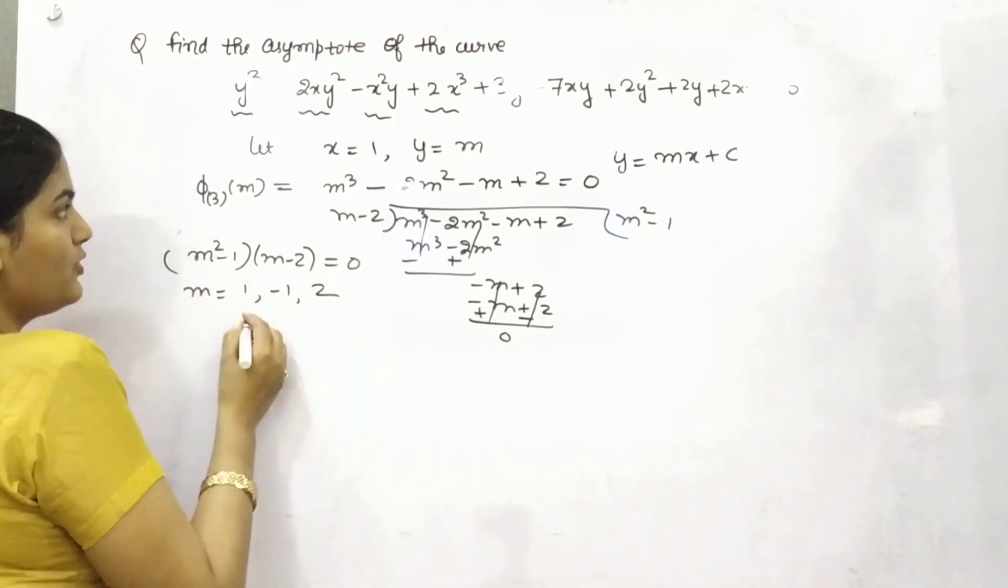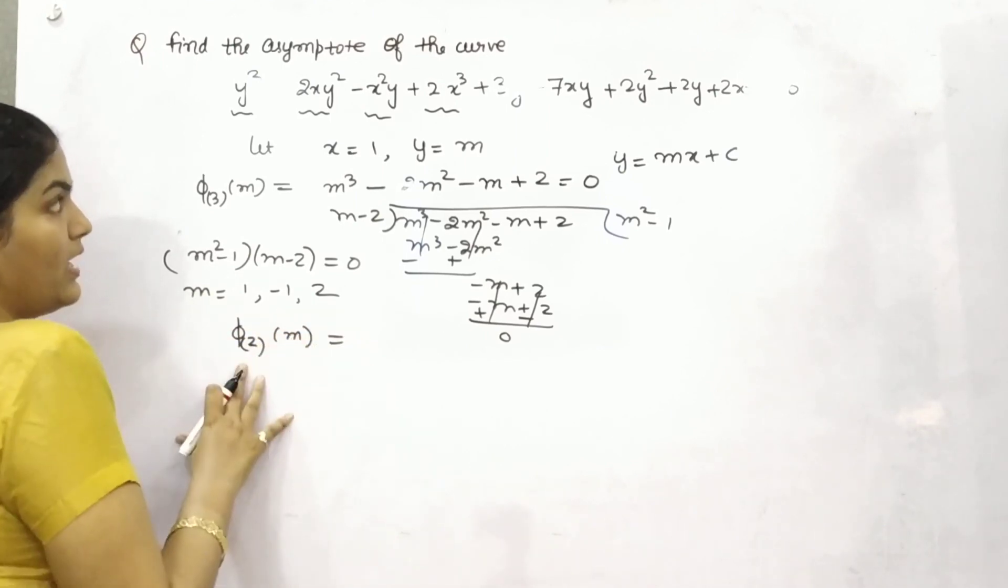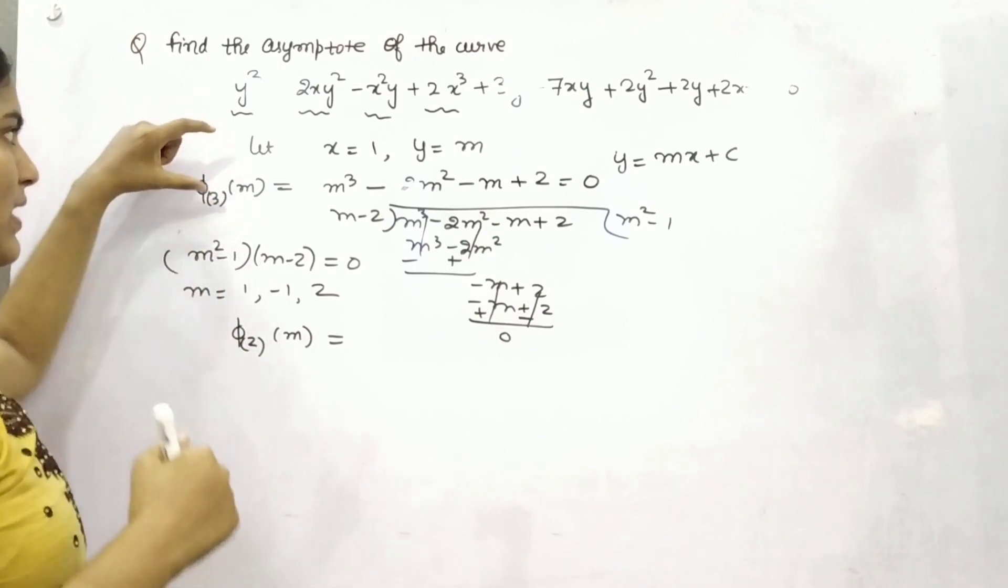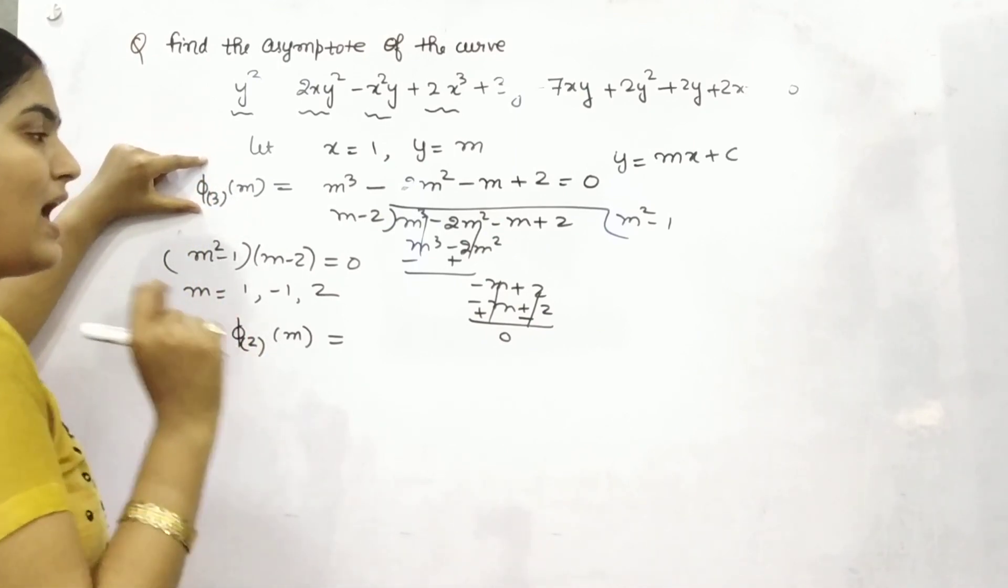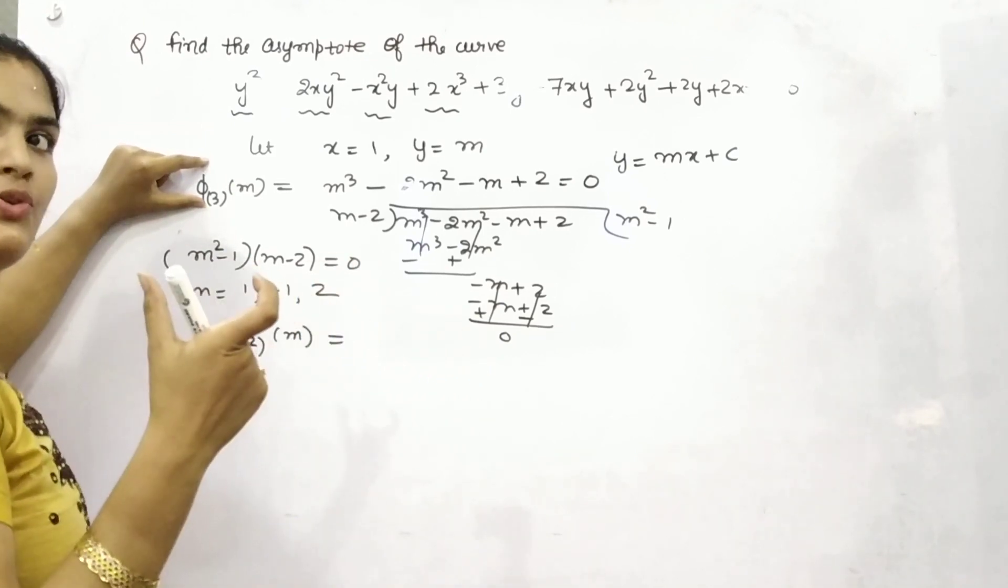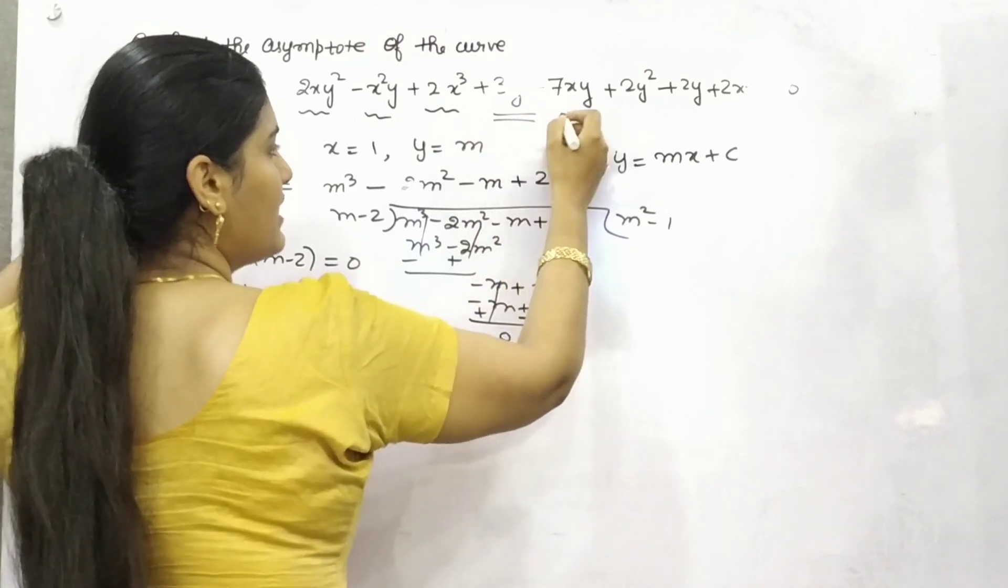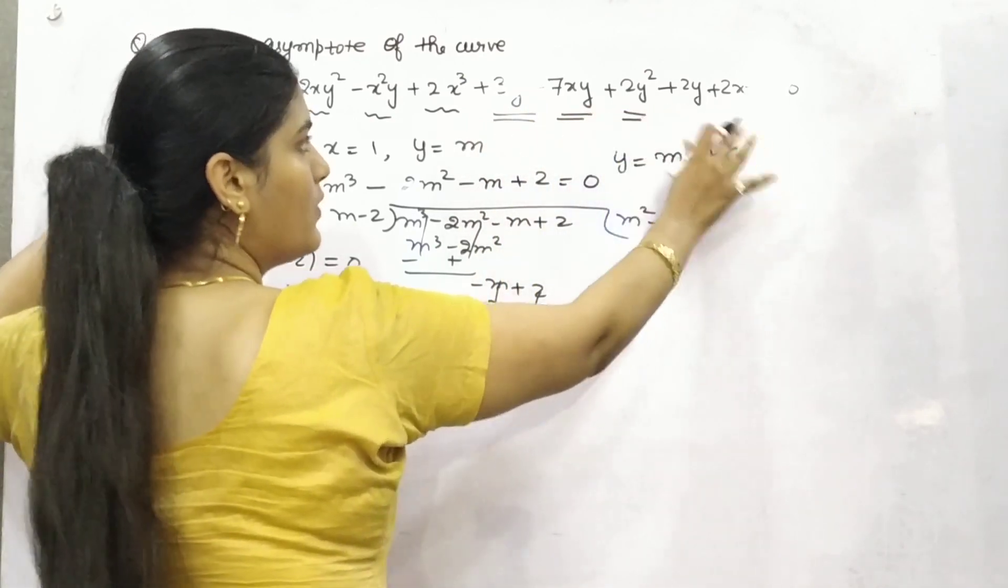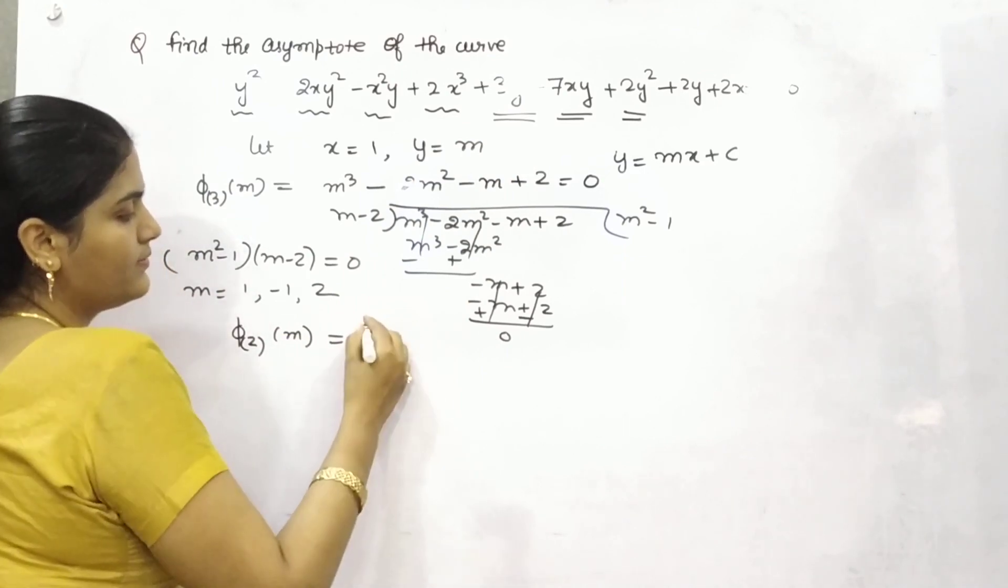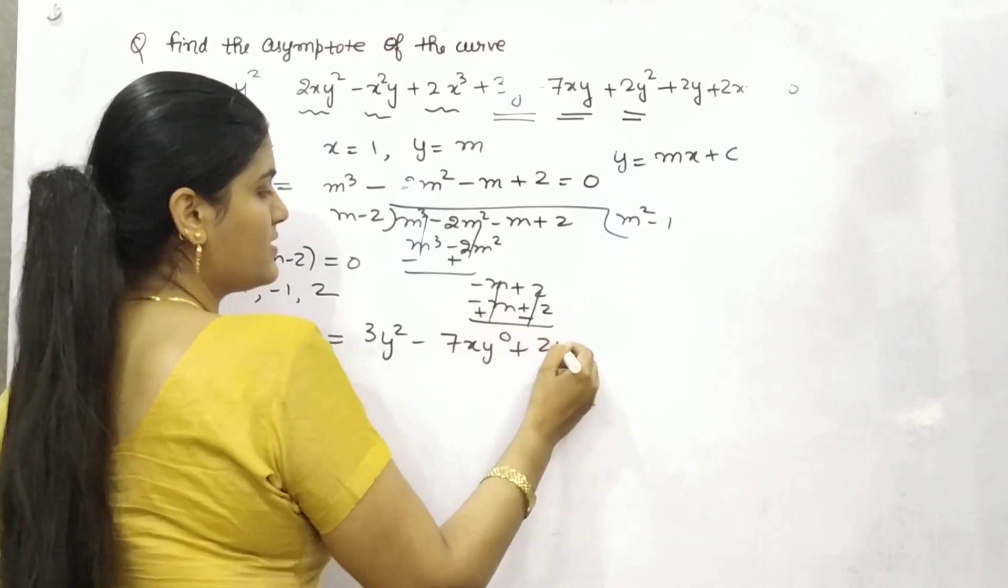Thereafter, find out only the values having one less degree. That means you have found out about highest degree which is 3 here. Now take those terms which are having degree as 2. So this is having 2, 2, 2. The rest have 1. So now these are 3y square minus 7xy plus 2y square.